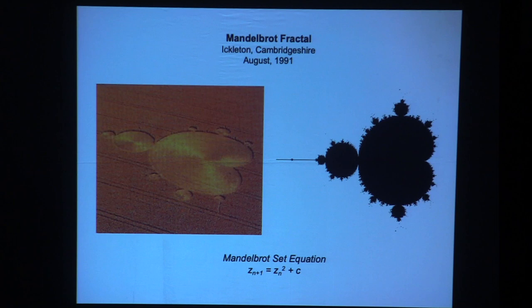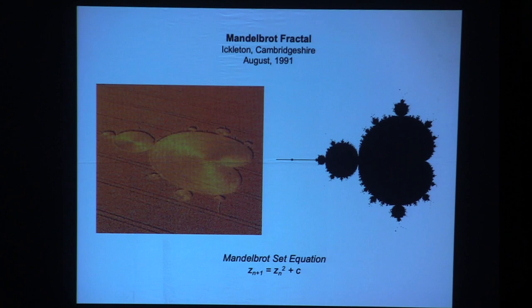In 1990, a scientist said these are getting so complex, I wouldn't be surprised to see a Mandelbrot fractal out there in the field. And sure enough, 1991, there it is. The Mandelbrot fractal is actually a graph of a very complex equation — a mathematical equation dealing with imaginary numbers — and it goes on infinitely in terms of detail. What appeared in the field is certainly a faithful representation and approximation of what the Mandelbrot fractal looks like.